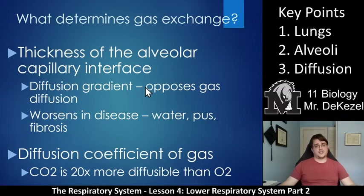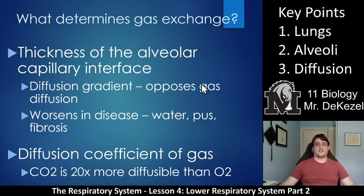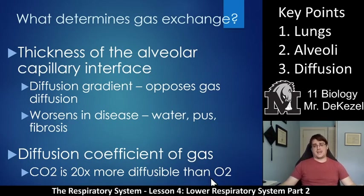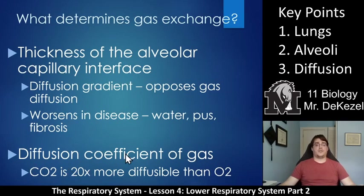The thickness of the alveolar-capillary interface also determines gas exchange. If each is one cell thick, gas exchange happens very quickly; if thicker, it happens more slowly. This worsens in disease — water, pus, mucus, and cystic fibrosis can all prevent oxygen from moving through. Additionally, each gas has a different diffusion coefficient: CO2 is 20 times easier to diffuse than oxygen, so CO2 can move through even with a low concentration gradient.